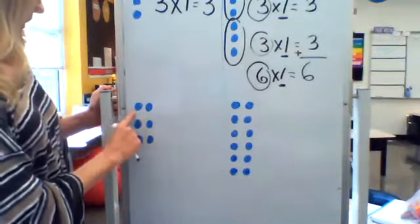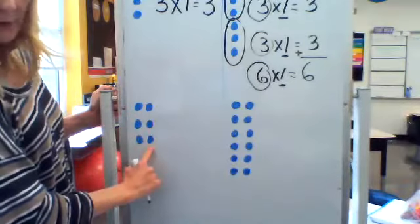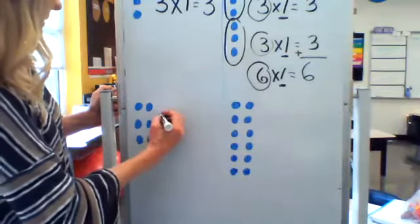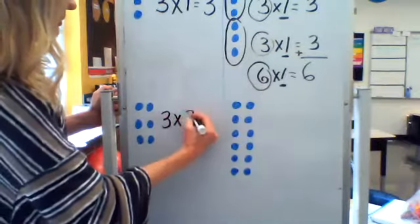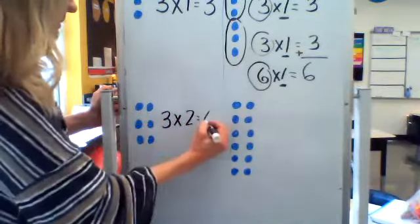So this is three groups tells me there's one group, two groups, three groups, and there's two in each group. So three groups of two, two, four, six, that's going to equal six.